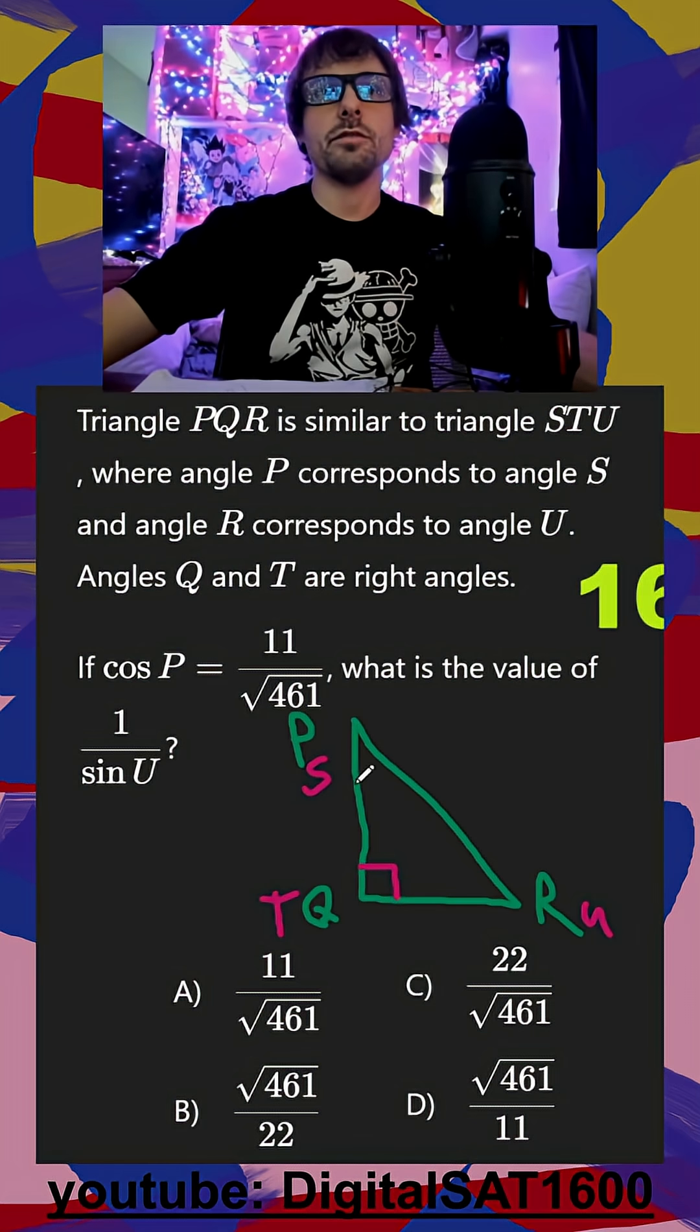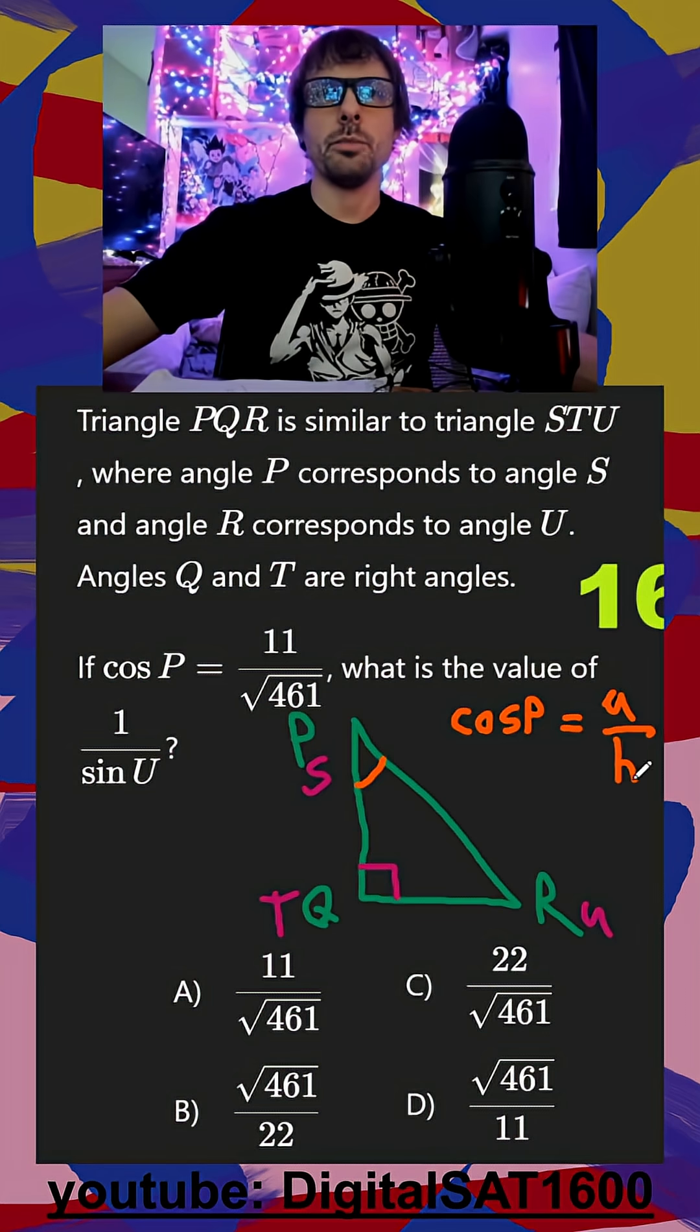Next, they say cosine of P is 11 over square root of 461. The cosine of P is going to be equal to our adjacent over our hypotenuse. So our adjacent here is going to be 11, and our hypotenuse is going to be square root of 461.